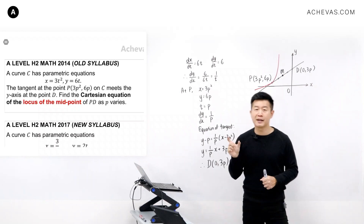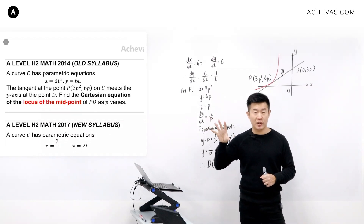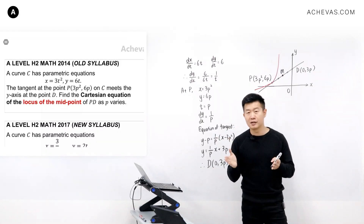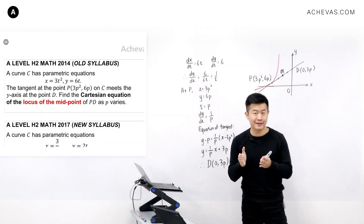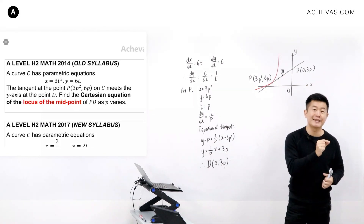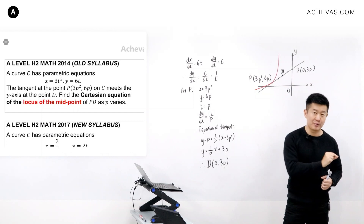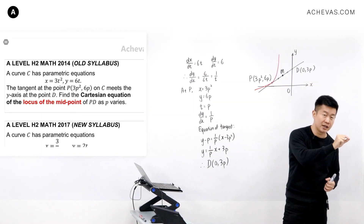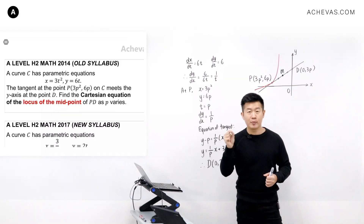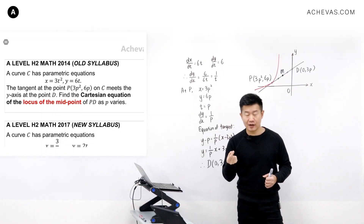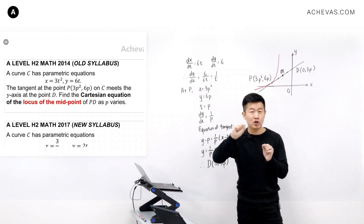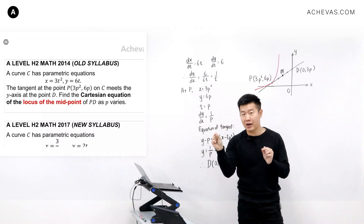In the topic complex numbers, students were required to sketch a representation of a variable complex number on an Argand diagram. In the new syllabus, we usually just sketch a fixed complex number represented as a point. But in the old syllabus, they were sketching a variable complex number, so you would be looking at multiple points, and when you join these multiple points together, it forms a path.